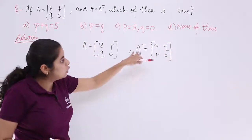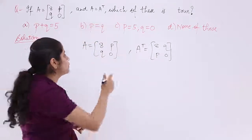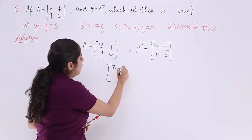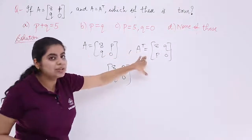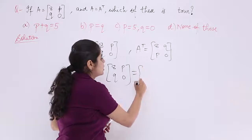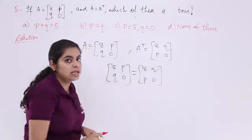Now you already have A, you have found out A transpose. The question says these both are equal, so what is equal to what. 8, P, Q, 0, that means A is equal to the next matrix, which is 8, Q, P, 0. Now compare.